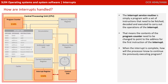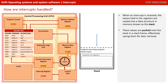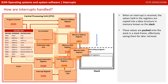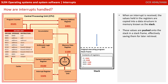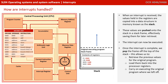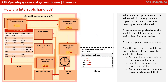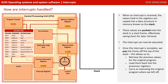When the interrupt is complete, how will the processor know to continue the previous executing program it had to suspend? When an interrupt is received, the current values held in the registers are copied into a data structure in memory known as the stack. These values are pushed onto the stack in a stack frame, effectively saving them for later retrieval. The interrupt can now be executed, and once the interrupt is complete, we pop the frame off the top of the stack. By using this stack, it allows us to retrieve the previous values for the original program, load them back into the processor's registers, and carry on executing where we left off.